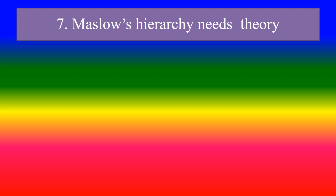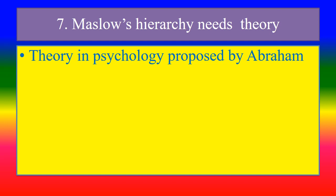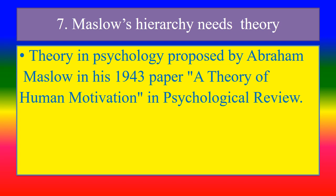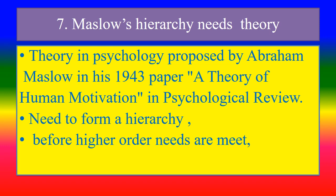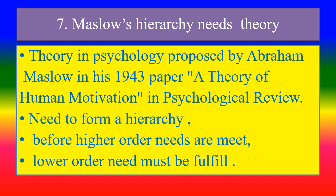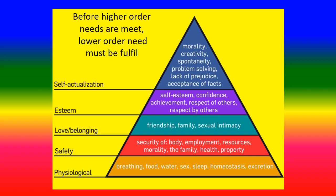Seventh: Maslow's Hierarchy of Needs Theory. This theory in psychology was proposed by Abraham Maslow in 1943 in his paper 'A Theory of Human Motivation' in Psychological Review. Needs form a hierarchy — before higher-order needs are met, lower-order needs must be fulfilled. The hierarchy of needs includes: physiological needs, safety needs, love and belonging, esteem, and self-actualization.